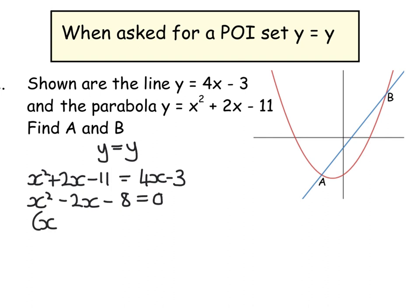So minus 11 plus 3 would give me minus 8 equal to 0. Then we're going to factorize numbers that multiply to 8 and add to 2. To get that negative, it's going to have to be negative 4 plus 2. And when you solve them, you get x equals 4 and you get x equals minus 2. So we already have two parts of a coordinate.